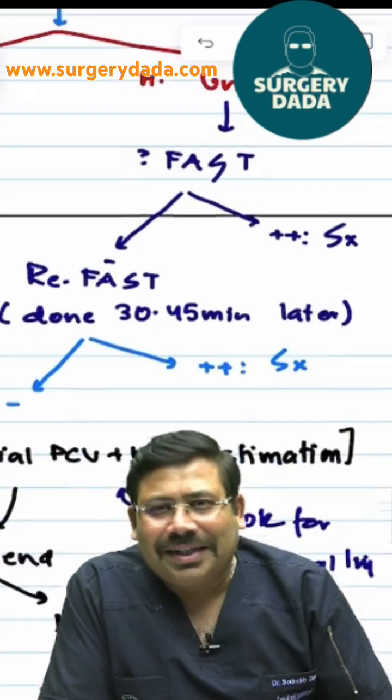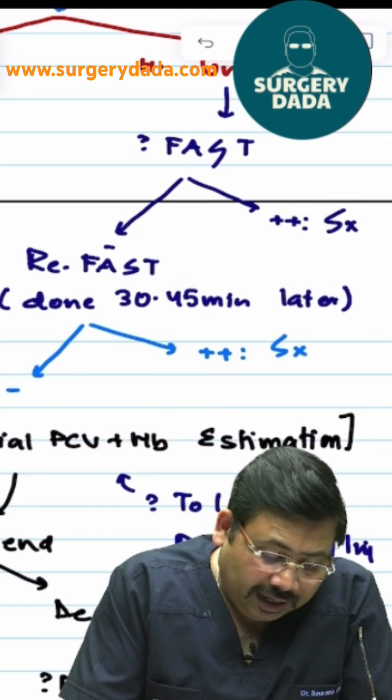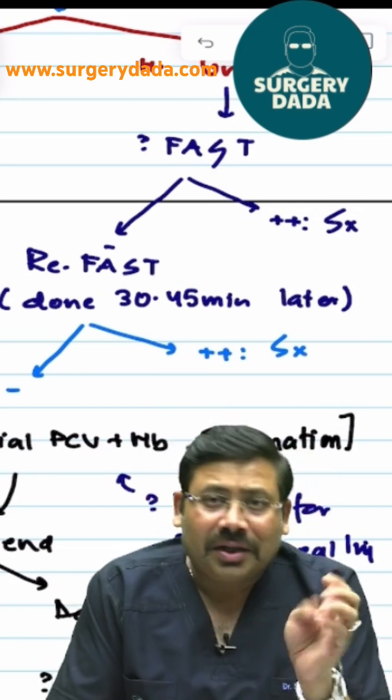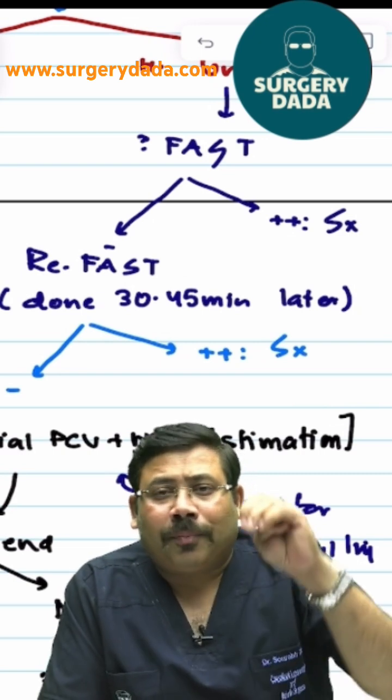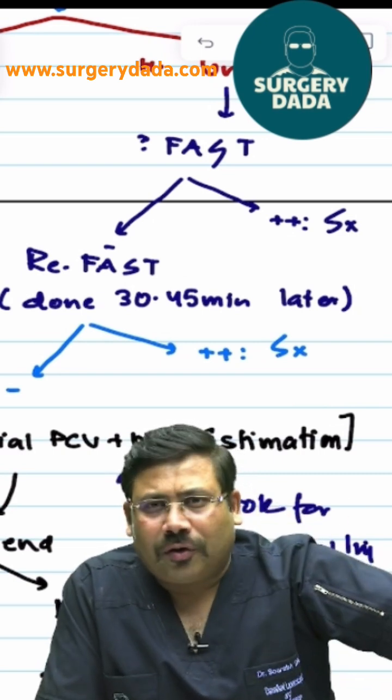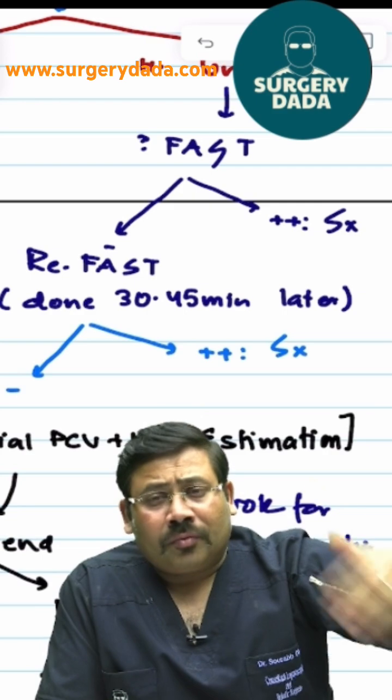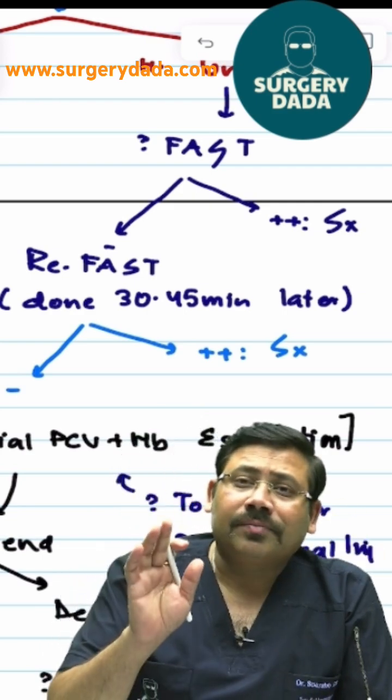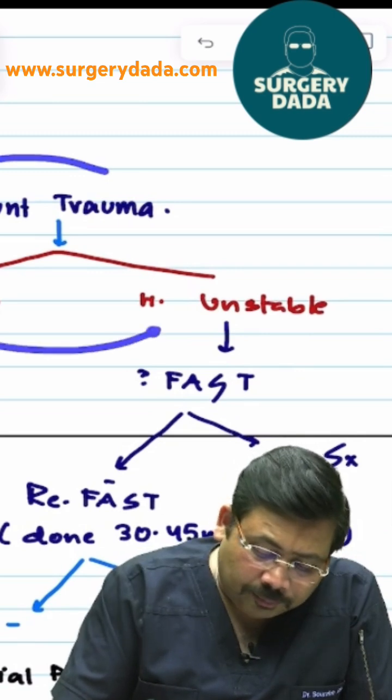If the patient is stable, you need to go for CT scan. Remember there's a catch: any penetrating injury related to gunshot injury, impaled object, evisceration, or penetrating injury with bleeding from the natural orifices - you will not waste your time, you'll go for surgery irrespective of the status.